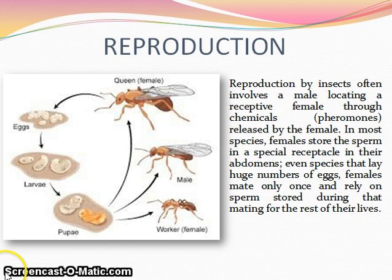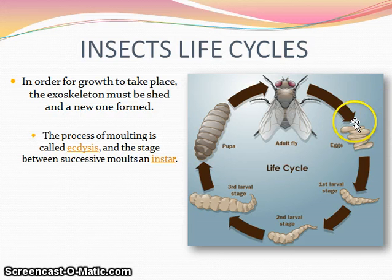Insect life cycles. The main disadvantage of the exoskeleton is that it cannot expand with growth. The new exoskeleton will be soft at first, so the body must be expanded before the new one hardens. The process of molting is called ecdysis, and the stage between successive molts is called an instar.